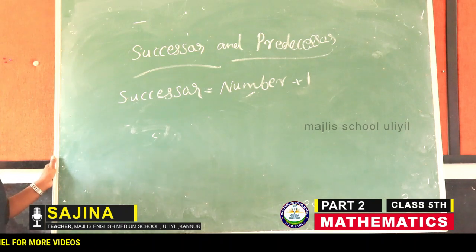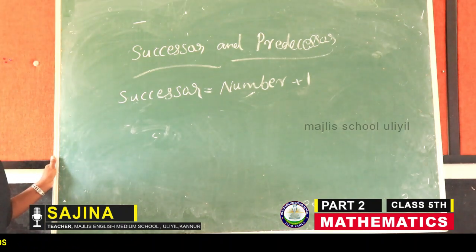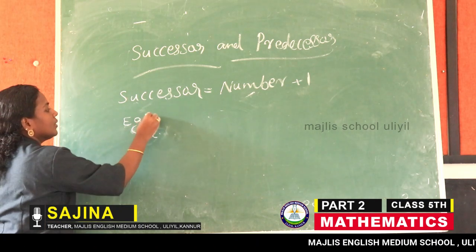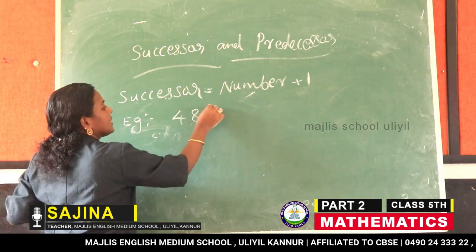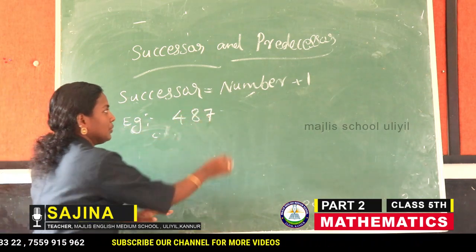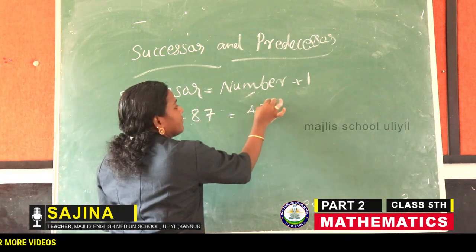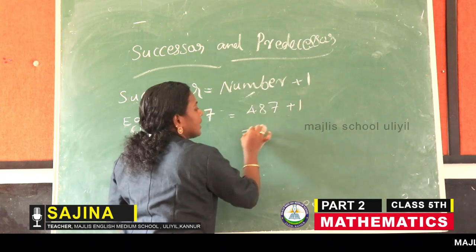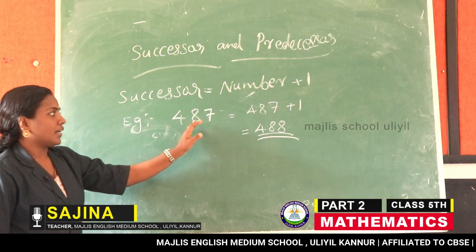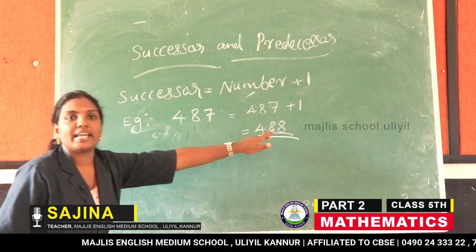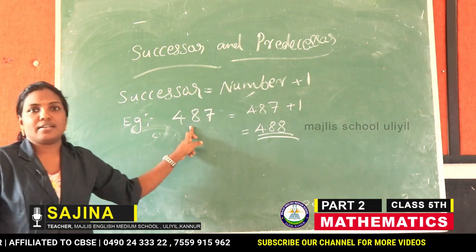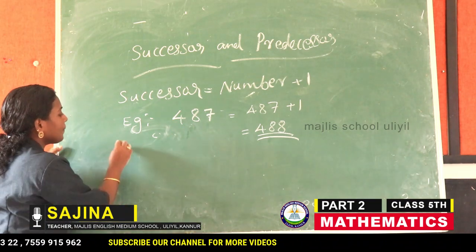Just after the number, or one more than the number, is the successor of a number. For example, successor of four hundred eighty-seven is equal to four hundred eighty-seven plus one, which equals four hundred eighty-eight. Therefore, four hundred eighty-eight is the successor of four hundred eighty-seven. Next, predecessor.